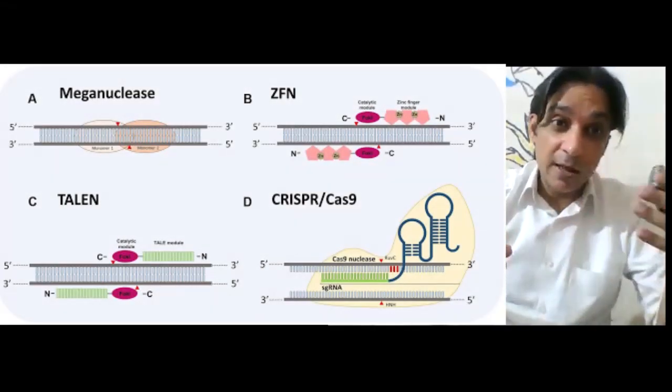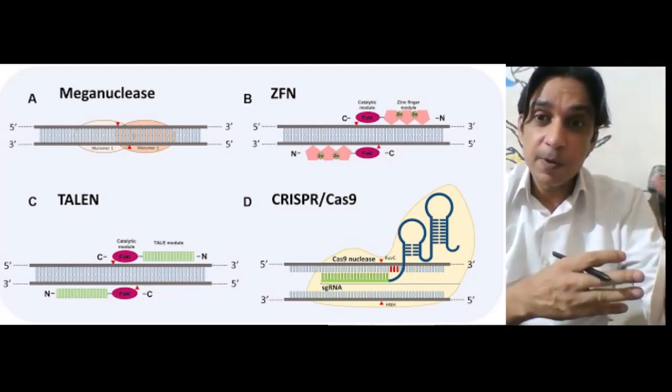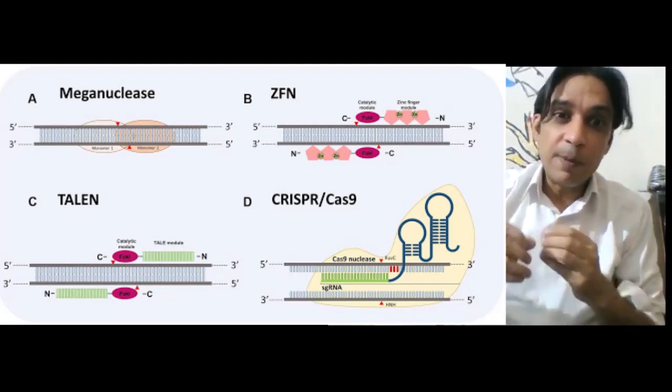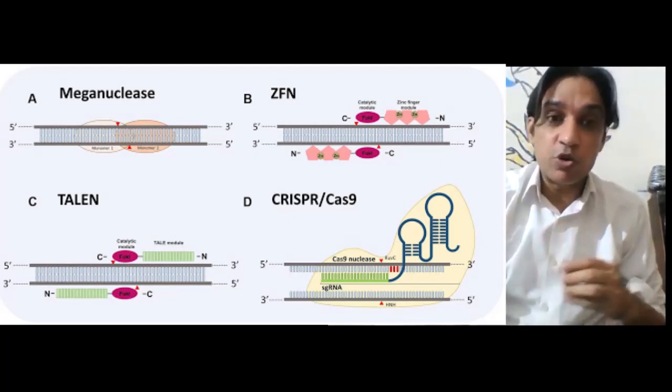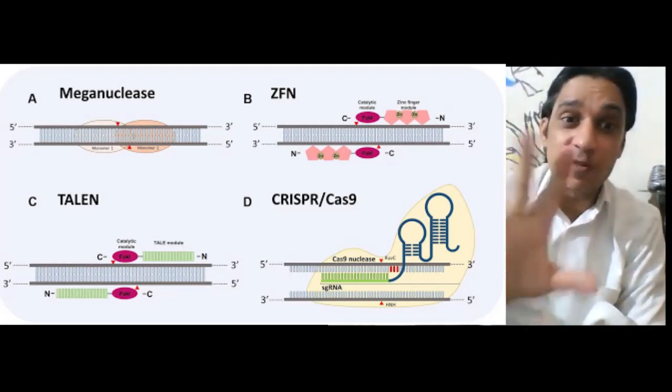They have developed targeted genome editing methods like zinc finger nucleases, TALENs, and now CRISPR-Cas system. All these systems are allowing humans to manipulate the genome at the place of our own choice, and that is not just to cure disease.